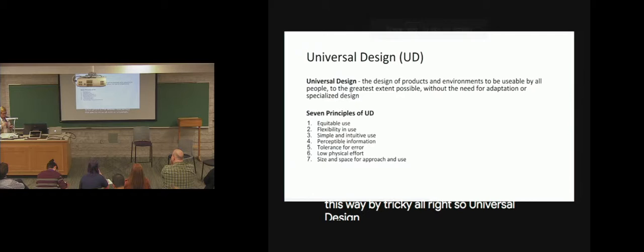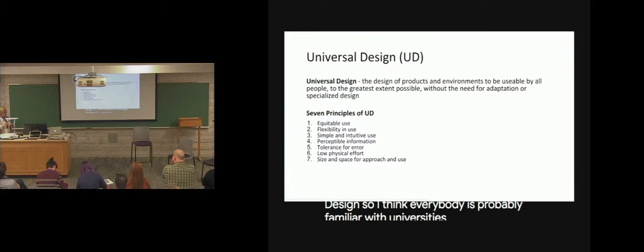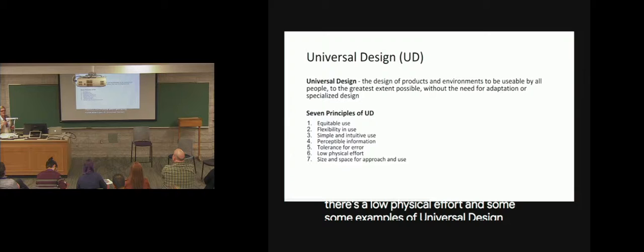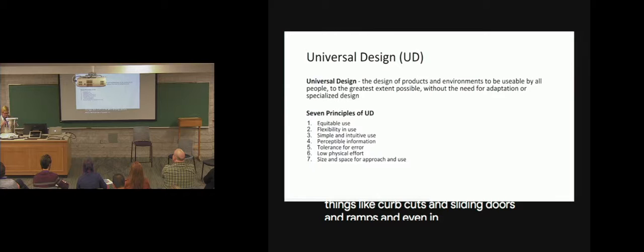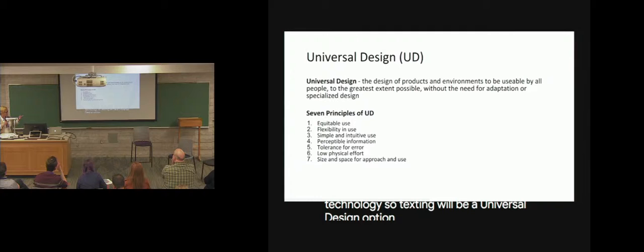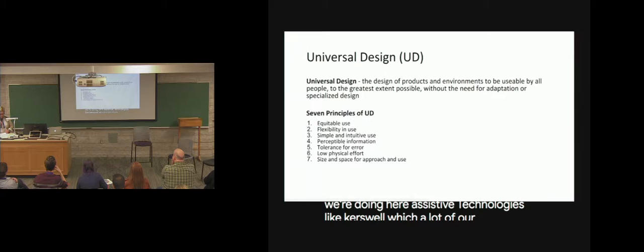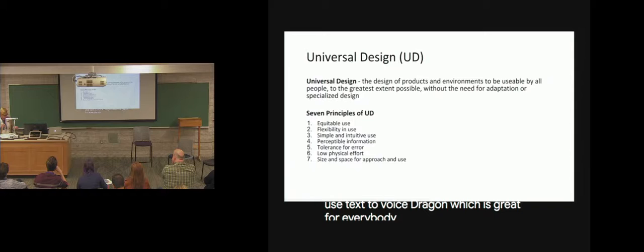So I'm going to talk a little bit about universal design. I think everybody is probably familiar with universal design and the principles of it. So it's about equitable use and flexibility in use. And it's simple. And there's a low physical effort. Some examples of universal design are things like curb cuts and sliding doors and ramps. And even in today, like technology. So texting would be a universal design option. Closed captioning, which we're doing here. Assistive technologies like Kurzweil. Dragon, which is great for everybody.